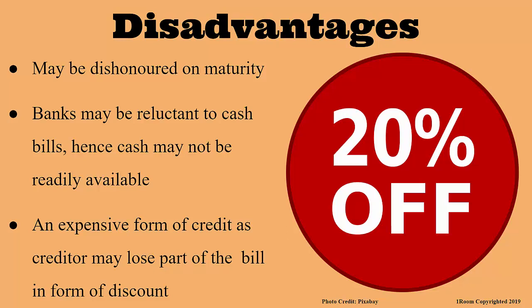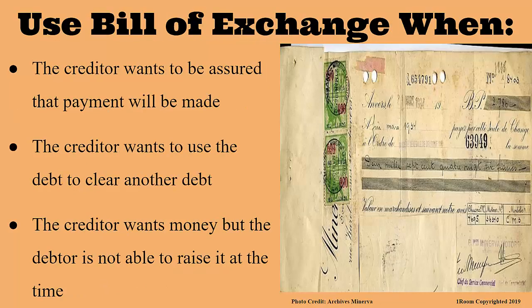All this brings us to when it is appropriate to use a bill of exchange. Its most important function is that it is used when the creditor wants assurance that he will be paid. Secondly, it is used where the creditor wants to make a third-party payment — that is, pass the money from the debtor to another person. It is also used where the creditor wants money but the debtor does not have it at the time; since it is legally binding, it forces the debtor to pay.